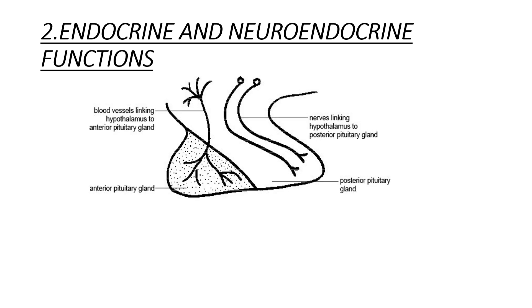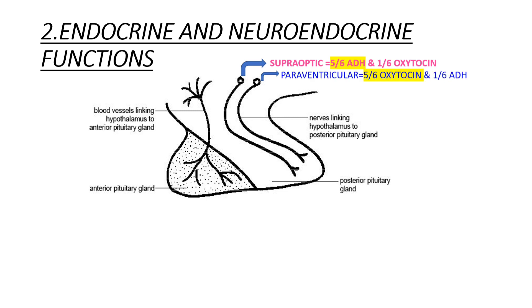The hypothalamus regulates endocrine and neuroendocrine functions. The master gland is the pituitary, which has two parts: anterior and posterior pituitary. Regarding the posterior pituitary: it is innervated by axons from the supraoptic and paraventricular nuclei of the hypothalamus. Hormones such as ADH and oxytocin are synthesized in these nuclei, transported down the axons, and released from the posterior pituitary into the circulation as free ADH and free oxytocin.